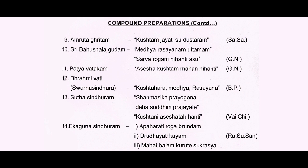Coming to Sri Bahusalagudam — Mejjrasayanam, Kuttamam, Sarvam Rogam Nihati Asu — this is once again Mejjrasayanam and Kustakunam. Bousulagudam is a drug of choice in Kusta since it possesses Rasayana property — from Gadhanigraham. Coming to Pachyavattakam — Asesha Kustam Mahanihanthi — even though most Kustas are aggressive in nature, the aggressiveness can be managed with Pachyavattakam — from Kadhanigraham.